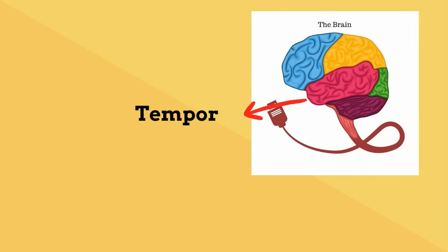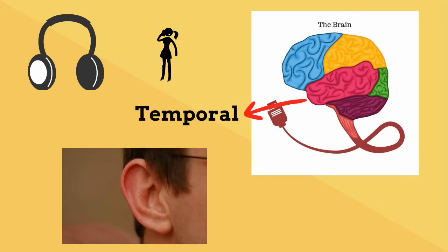The temporal lobe helps us process sounds. In other words, it helps us hear. It also helps with some balance.